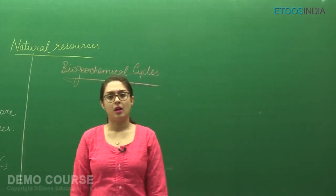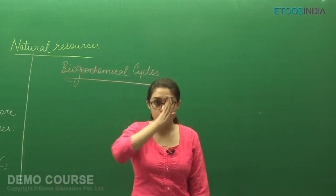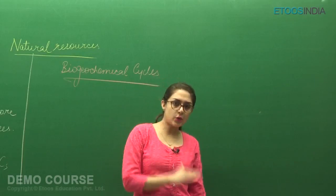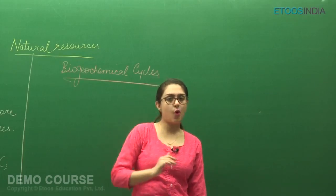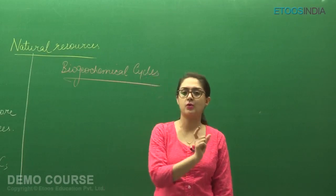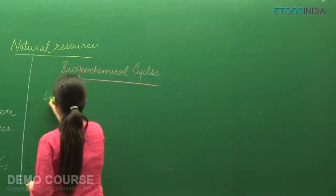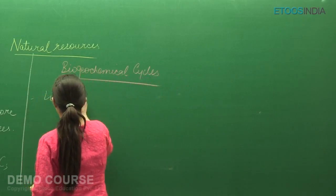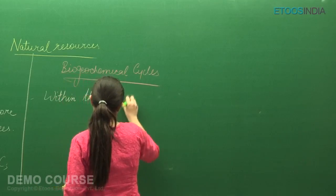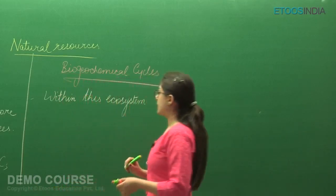But the unwanted and unmanaged activities of humans are actually deteriorating this ecosystem. So within this ecosystem, within this environment, within this biosphere, there is an interaction between biotic and abiotic components. Within this ecosystem.